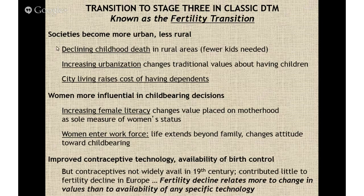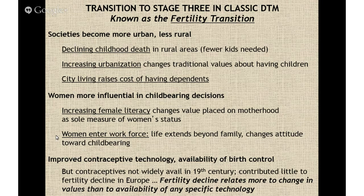In stage three, death rates are down quite a bit — especially childhood death rates — due to vaccines. Increased urbanization means city living raises costs, so people have fewer kids because it costs a lot to raise them. Women become more influential in childbearing decisions; literacy increases for women, and many choose to enter the workforce, creating a choice between career and family. Improved contraceptive technology and birth control become more common, balancing out population growth.